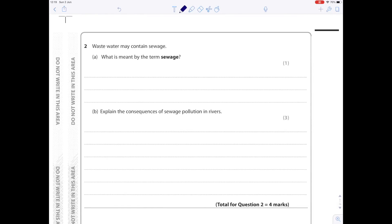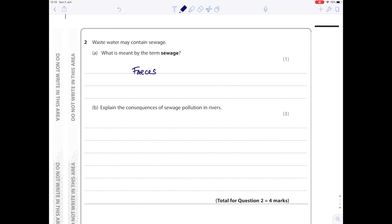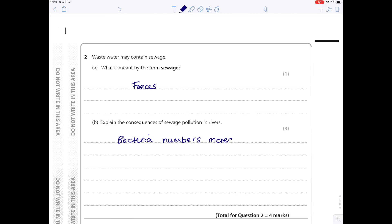Two. Wastewater may contain sewage. What is meant by the term sewage? Well, it's poo. So we're going to write the fancy word for that, which is faeces. Explain the consequences of sewage pollution in rivers. Well, what sort of organisms like breaking down faeces? That's bacteria. So bacteria numbers increase using up the oxygen in the river by their respiration. And remember, that's aerobic respiration. The water becomes anoxic, which means lacking in oxygen, leading to death of other aquatic organisms.